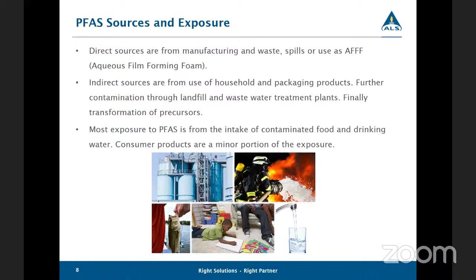So where can PFAS be found? At this point, it is pretty much everywhere. However, these compounds are increasingly being found around military sites, airports, firefighting training facilities, in the runoff from fire incidents, landfills, and production facilities. The direct sources are coming from manufacturing waste, spills, and use of AFFF, and then indirectly from use of household and packaging products. These compounds are surfactants and are very soluble in water. They find their way into the environment and, in particular, into our drinking water supplies — from industrial discharge, wastewater treatment plants, treated sludge land applications, and through long-range air dispersion.